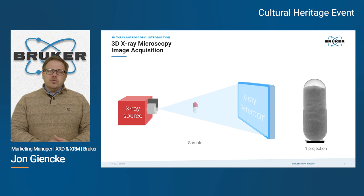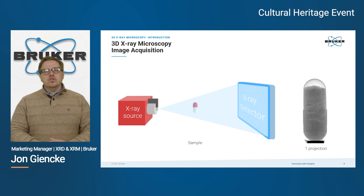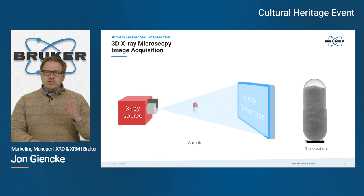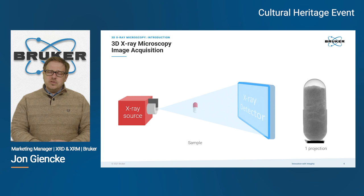One benefit of using x-rays is that they start from a very small origin in the x-ray source which then expands — this is called the cone beam projection geometry, and it affords some magnification. By placing the object closer to the source, we achieve higher magnification and higher resolution. Placing the specimen closer to the detector yields a larger field of view, allowing us to see larger objects in their entirety.